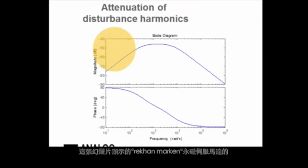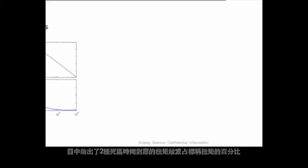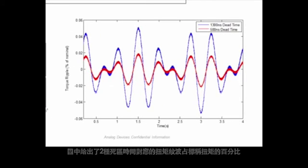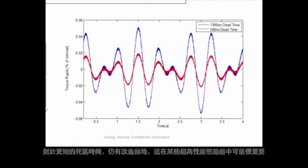This is illustrated here via simulation results from a closed loop controller for a ConMorgan permanent magnet server motor. The torque ripple in percent of nominal torque is shown for the two dead time levels. There is still an improvement with the shorter dead time, which may be important in some very high performance drives.